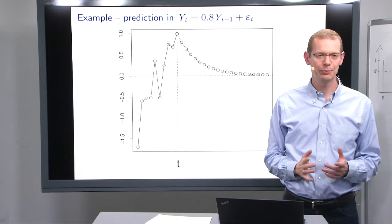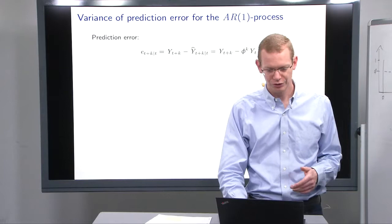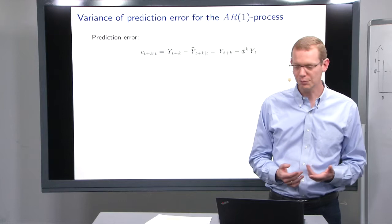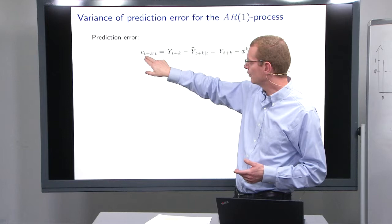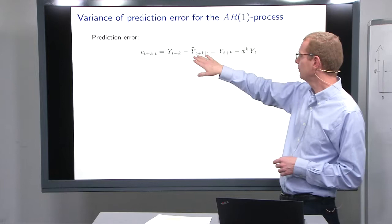One thing I've said repeatedly is that it's good to have predictions, but you need to know something about the uncertainty — otherwise you don't know what you actually know. So we need to look at the variance of the prediction error. For the AR(1) model, the error at time t plus k given t is the true value of y at t plus k minus the predicted value.